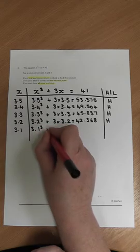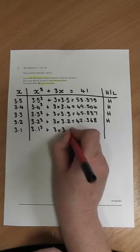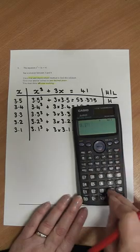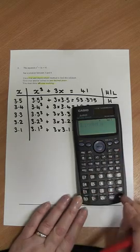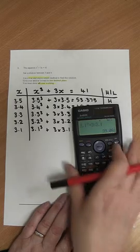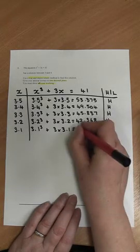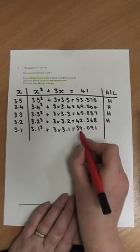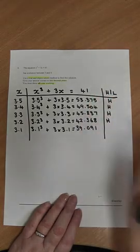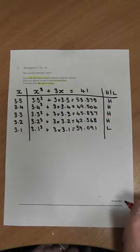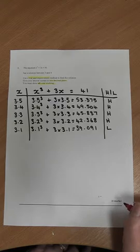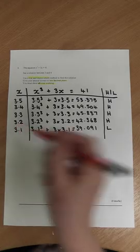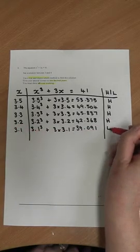We're now going to get 3.1 cubed add 3 times 3.1. 39.091. Now that is too low. 39 obviously is lower than 41 so we've got to put an L there. So we've now got this solution falling between two numbers. It's somewhere in between 3.1 and 3.2.